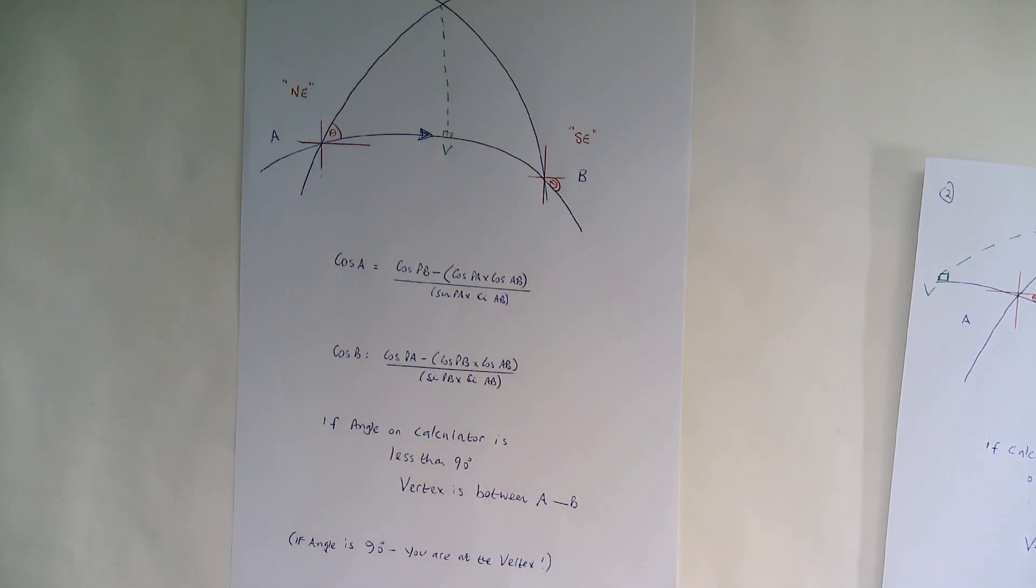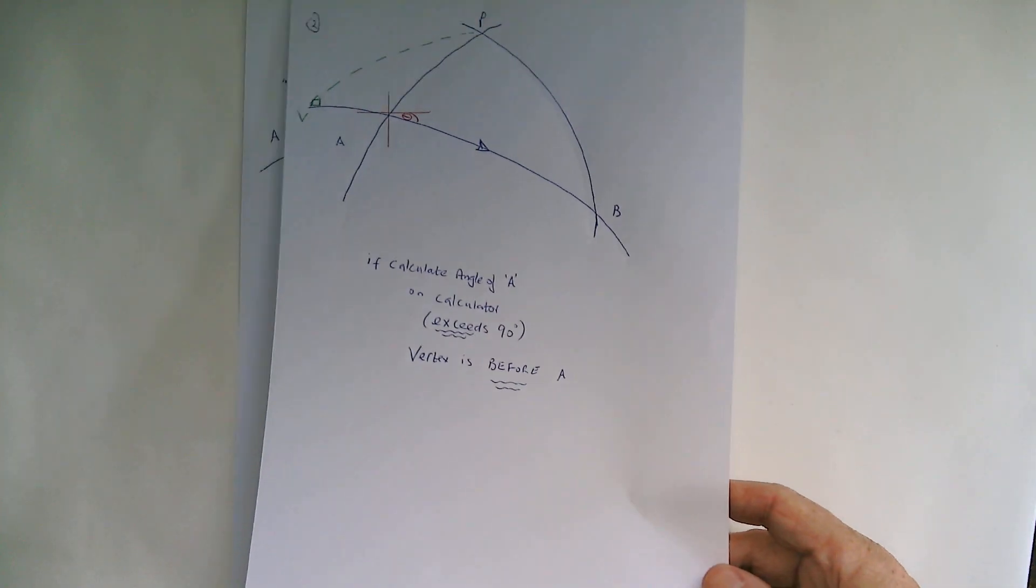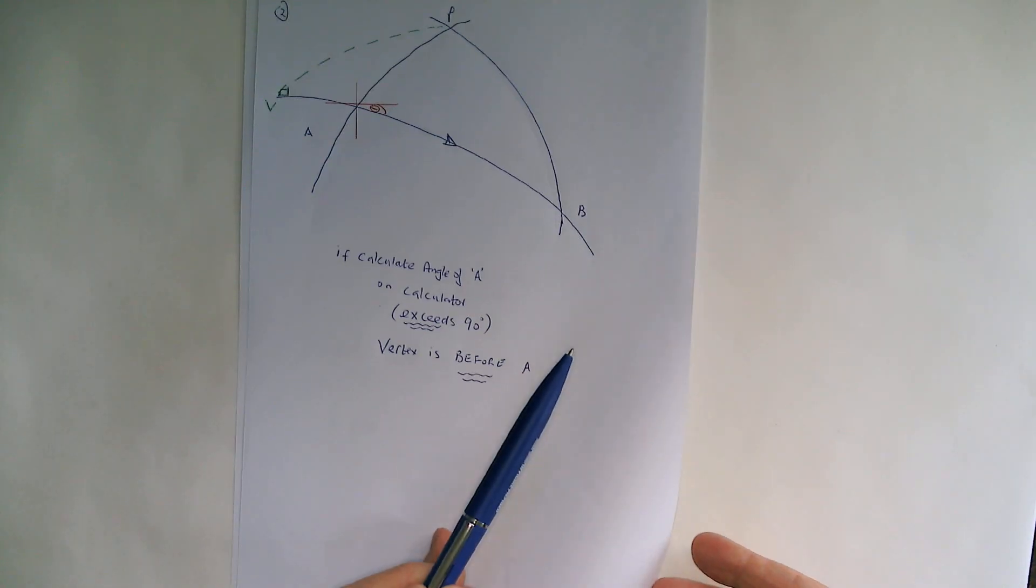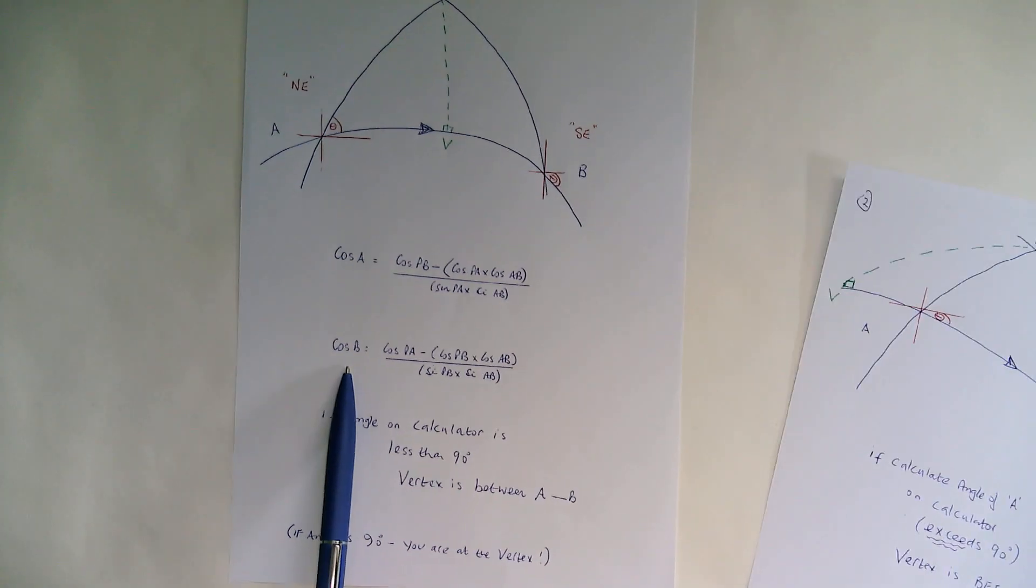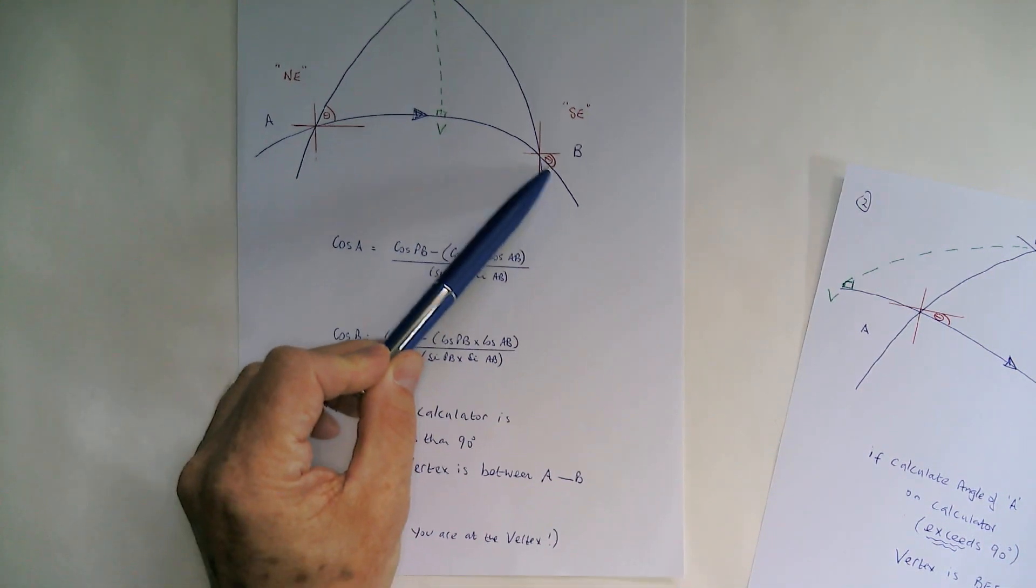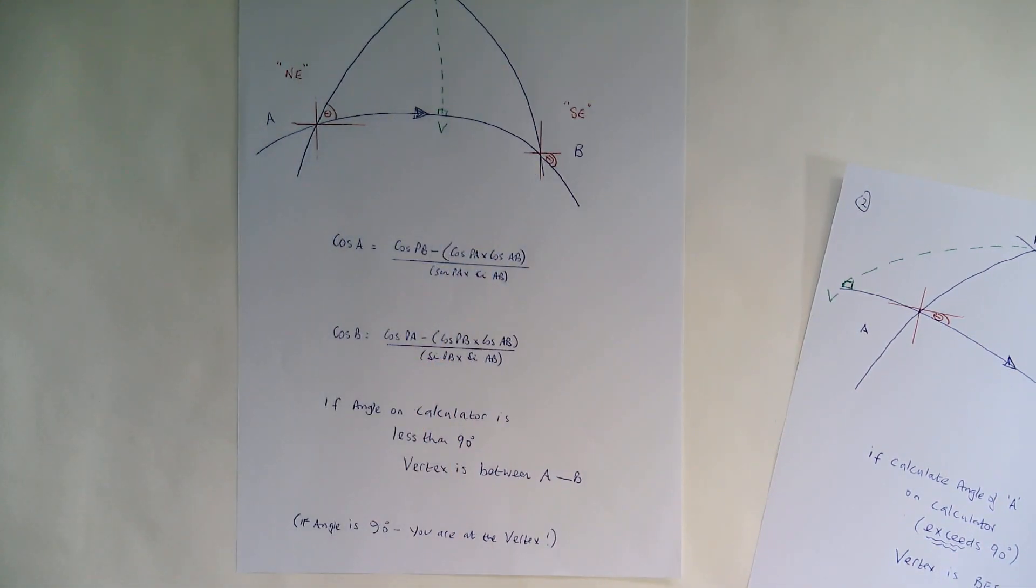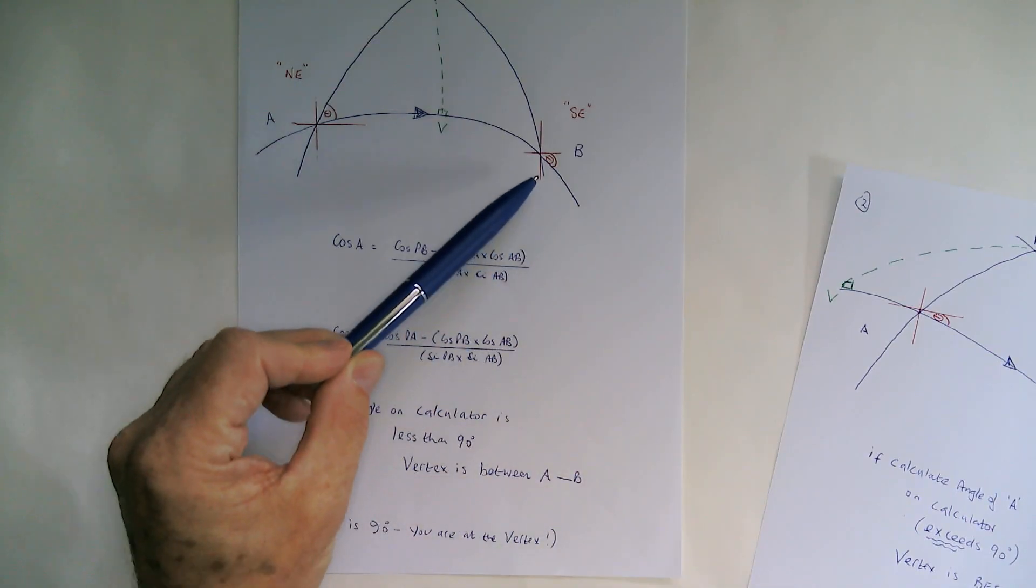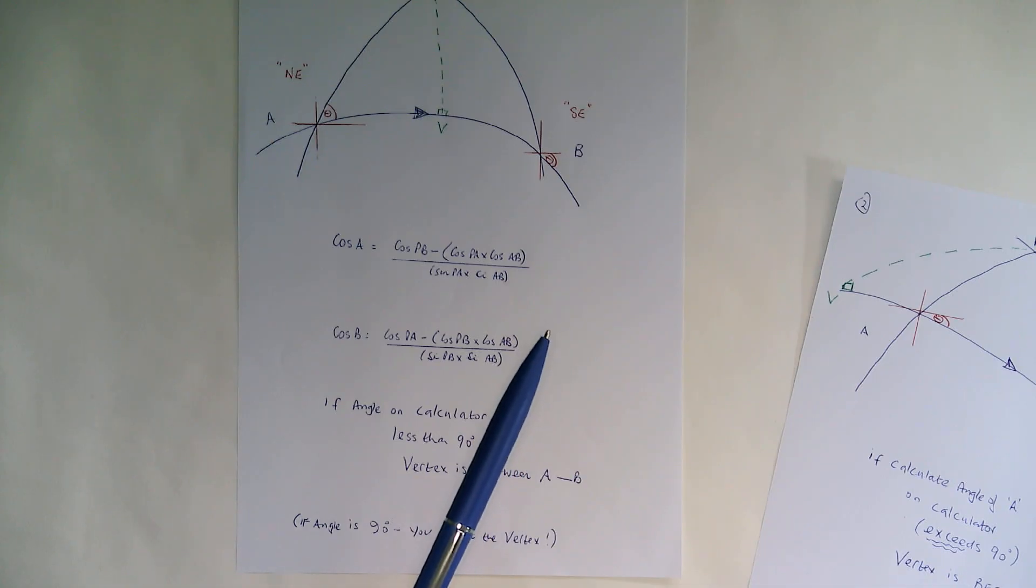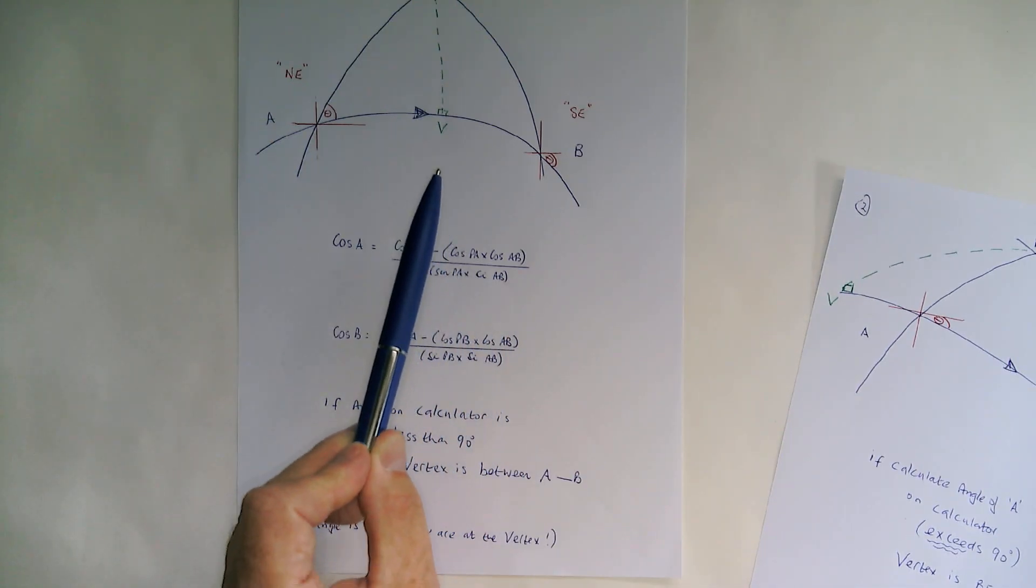So if the calculated angle of A exceeds 90, the vertex must be before A. The same rule applies when you are calculating the final course. Less than 90 degrees, then the vertex will be between A and B. Remember, you're naming the course southeast. If the angle exceeds 90, then the vertex must be after B.